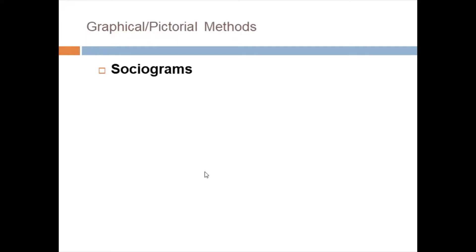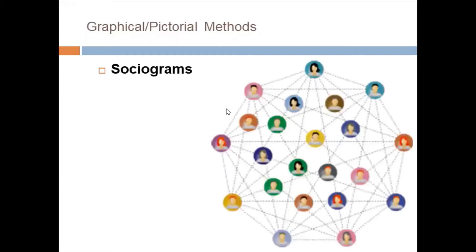Last is sociograms. This is a network of relationships among the variables. Sociogram shows the network of relationships, the nature of relationships that would otherwise be too complex to conceptualize. Sociogram makes it easy to view the data. That's all for today.